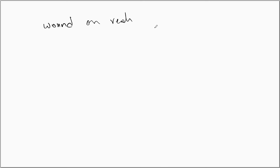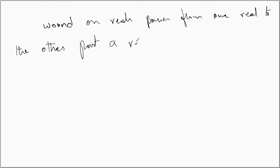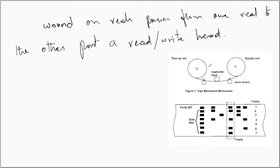The tape is wound on reels and passes from one reel to another past a read-write head. There are two reels: the first is called the supply reel, from which the tape is released, and the second is called the take-up reel, which winds the tape released by the supply reel. There are a couple of drive rollers and a read-write head that comes in contact with the tape.